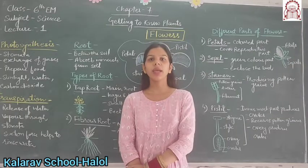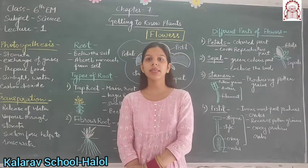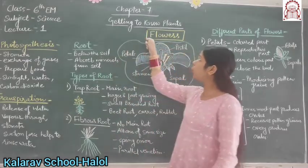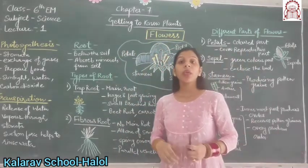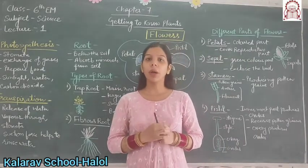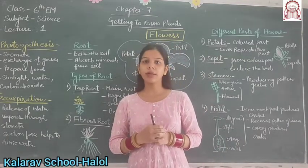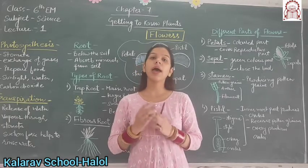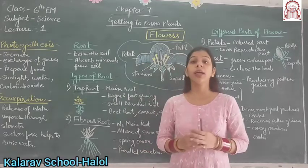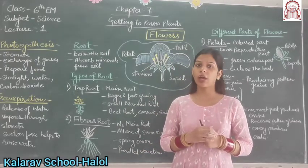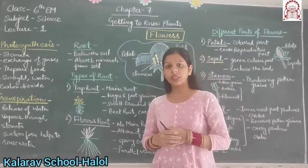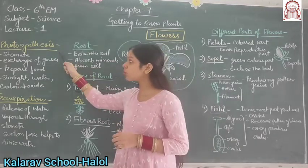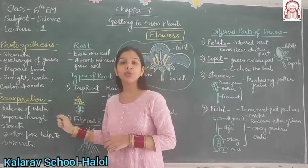Good morning students. Today I will teach class 6, chapter 7, i.e. getting to know about plants. In previous lecture, we had studied about the different parts of plants like leaves and stems. In today's lecture, I will discuss about the other parts of plant, i.e. roots and flowers. Before going further, we have to understand about two terms: photosynthesis and transpiration.